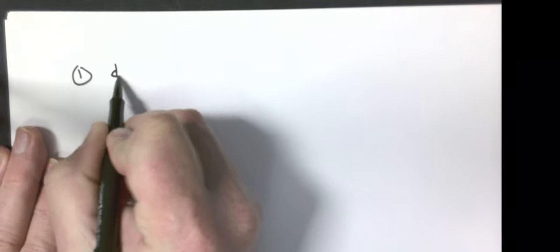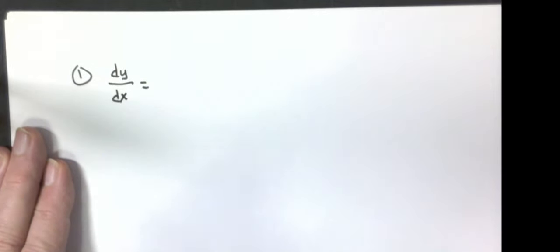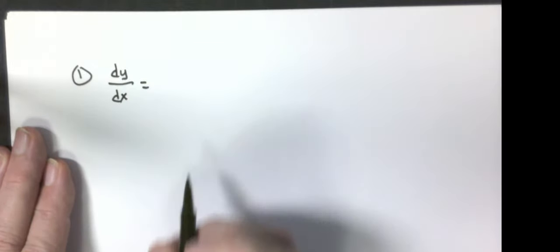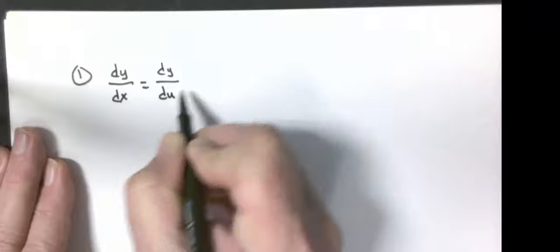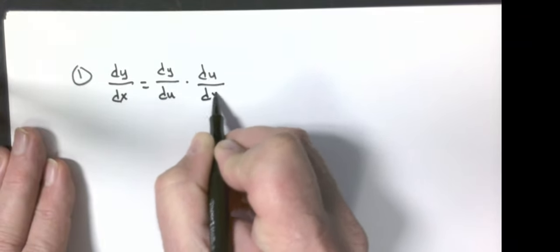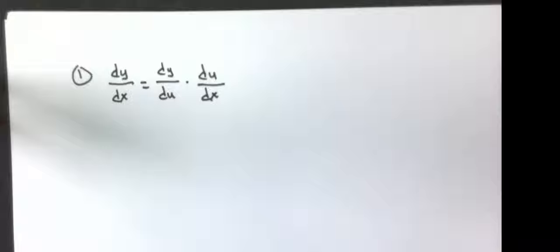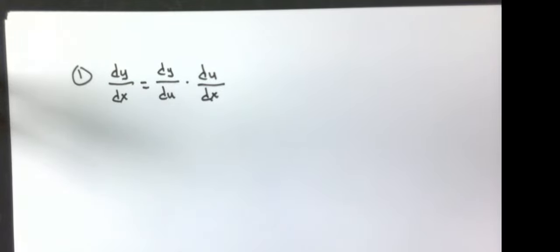I'll write the two different versions of the chain rule that I'm going to explain for doing calculus problems. Version one: dy/dx is equal to dy/du times du/dx. You're going to see how we can use this when I do some example problems.